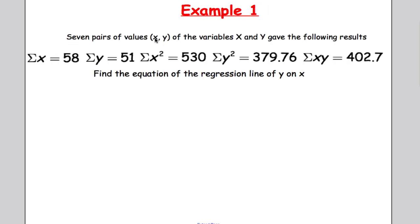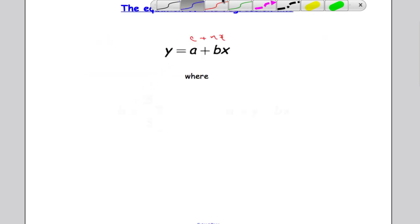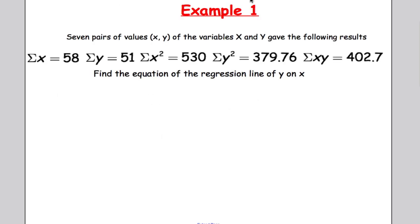So let's see how this works out in a question. So we got seven pairs of values x, y for two variables big X and big Y gave the following results. So we got our summary statistics here. And we're asked to find the equation of the regression line of y on x. So if you remember back we need to work out b which is going to be given by sxy and sxx. So let's do sxx first.